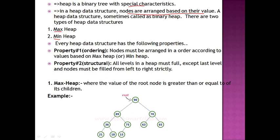Every heap, whether it is a max heap or a min heap, has two properties. Property one and property two. Property one is ordering. This means children nodes must be arranged in order according to values based on max heap or min heap — the values should be arranged in a specific way.